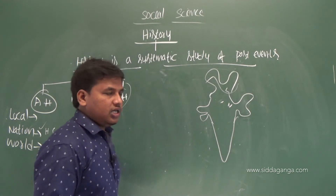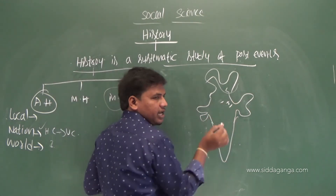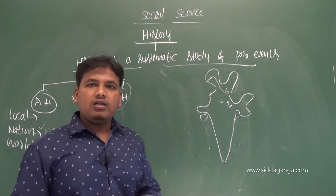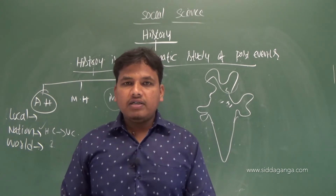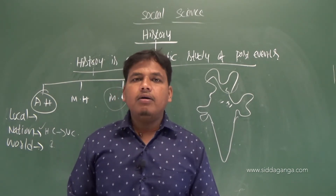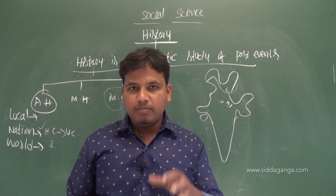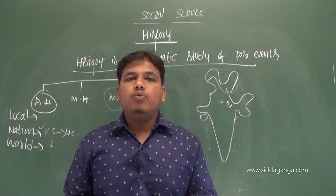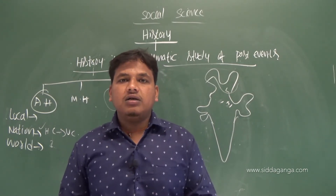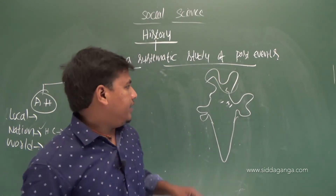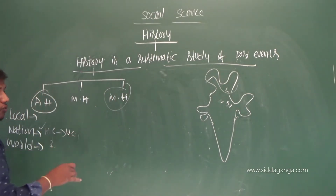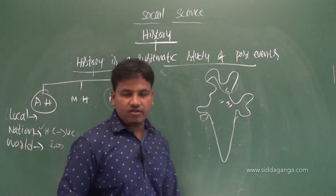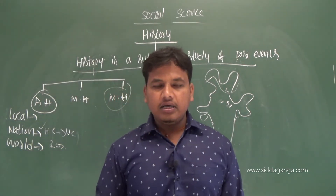After Chandragupta Maurya came Ashoka the Great, the famous king of the Maurya Empire. Ashoka spread Buddhism all over India and is popularly known for his religious policy. After the Mauryas, North India was ruled by the Gupta Empire, whose famous king was Samudra Gupta.